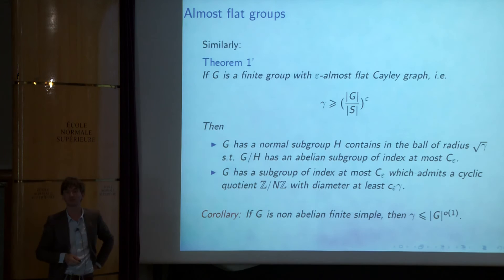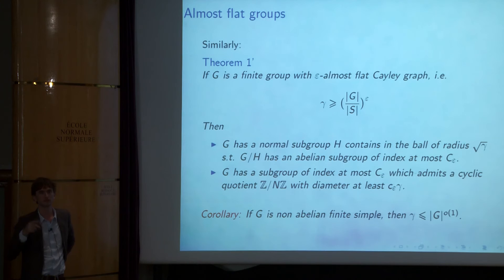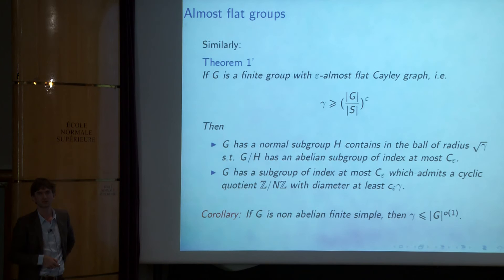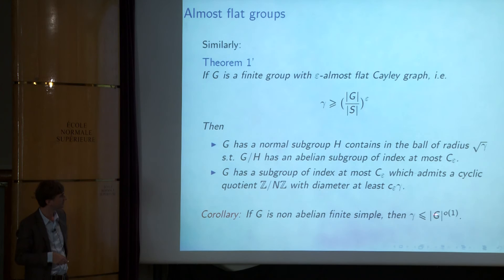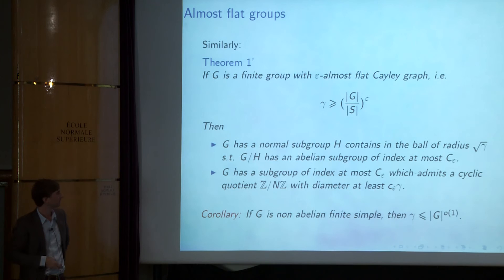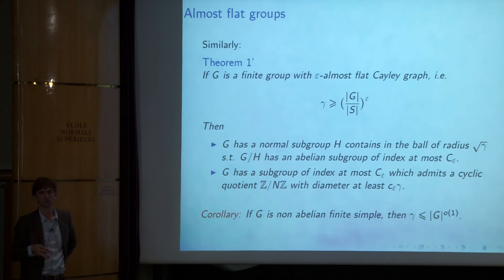Here is a consequence. Remember Babai's conjecture about finite simple groups with diameter at most log|G|^{o(1)}. An immediate consequence is that you get Babai's conjecture with a much weaker bound but holding for all finite simple groups: if G is a non-abelian finite simple group, then the diameter is less than |G|^{o(1)}. In other words, for any fixed epsilon, there are only finitely many finite simple groups with diameter bigger than |G|^epsilon. I should mention that all previous approaches toward Babai's conjecture used the classification of finite simple groups. This approach does not — it is independent of the classification, because it is geometric: the theorem gives a normal subgroup, which cannot exist in a simple group.